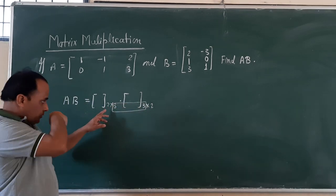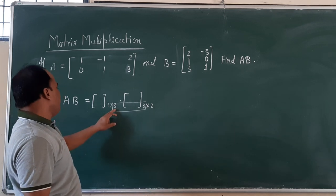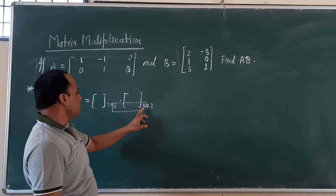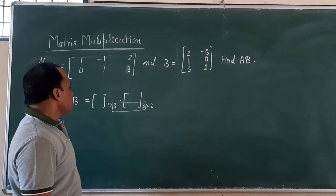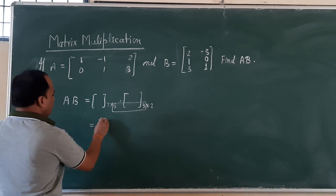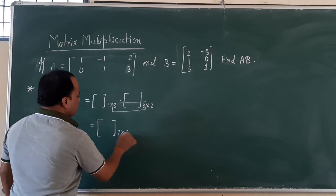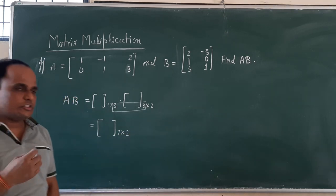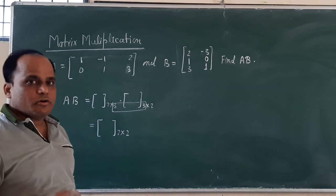This means the number of columns of first matrix is exactly equal to number of rows of second matrix. So matrix multiplication exists. And when we form the new matrix, the matrix order should be 2 cross 2. First we should check the order to see if matrix multiplication exists or does not exist.